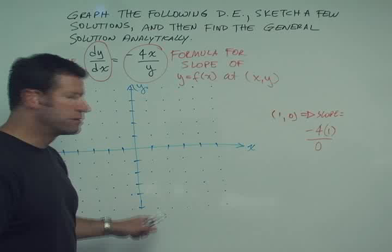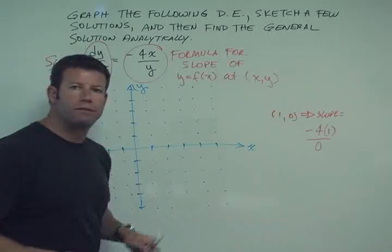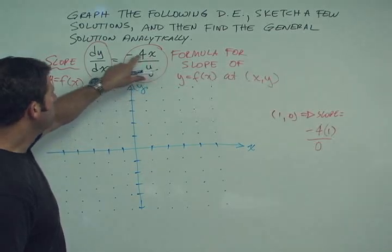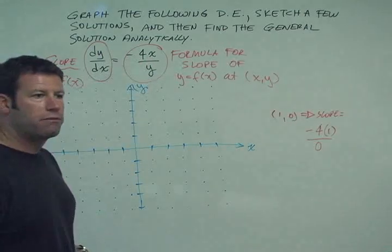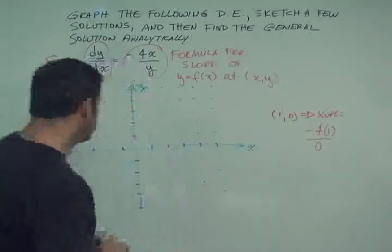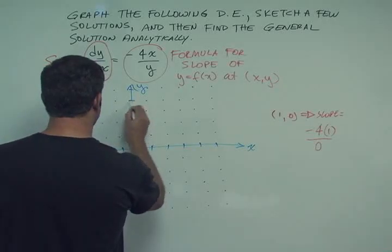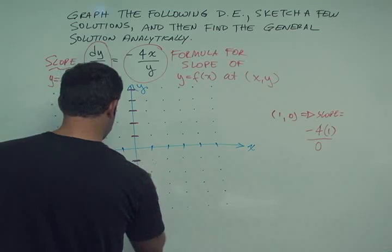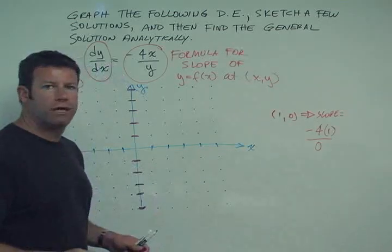Now let's look at the y-axis. In the case of the y-axis, x is always 0. So for any value of y, minus 4 times 0 over y is always going to be 0. And remember that a slope of 0 is a horizontal line. So all the points on the y-axis are going to be horizontal — this is horizontal, this is horizontal, this is horizontal. There's another 11 points handled.